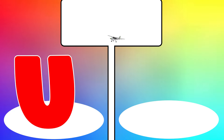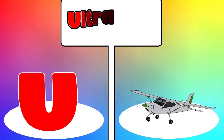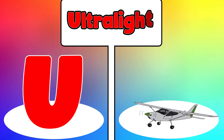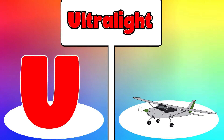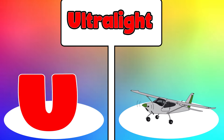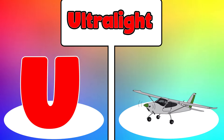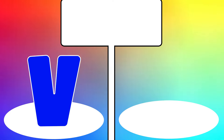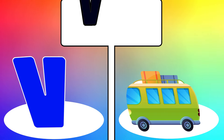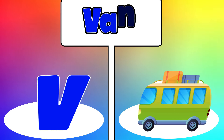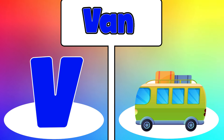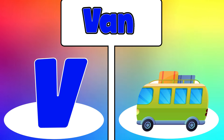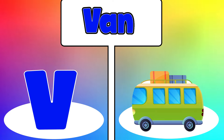U is for Ultralight. U, U. Ultralight, U is for Ultralight. U, U. V is for Van. V, V. Van, V is for Van. V, V.